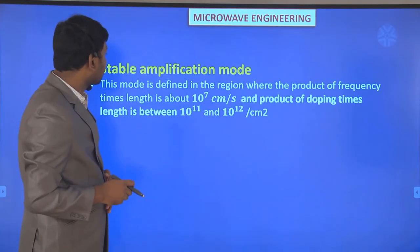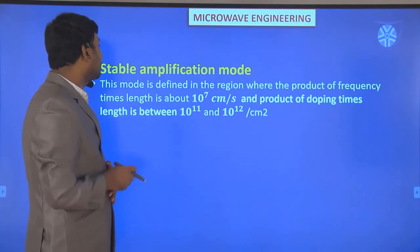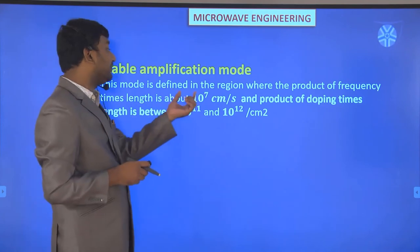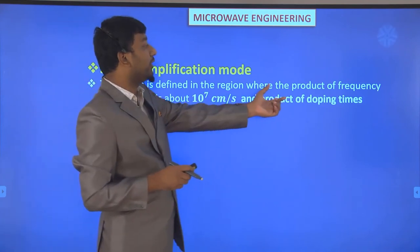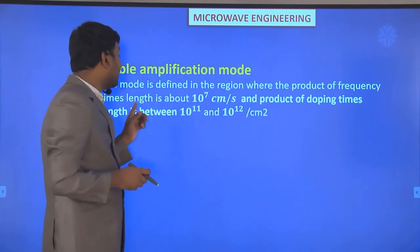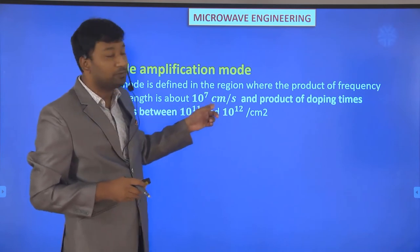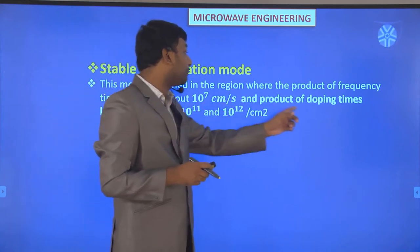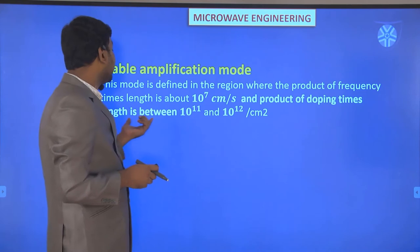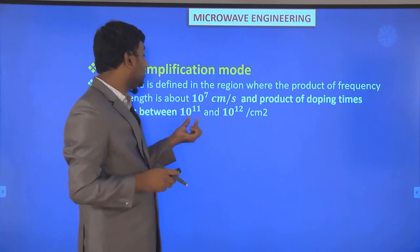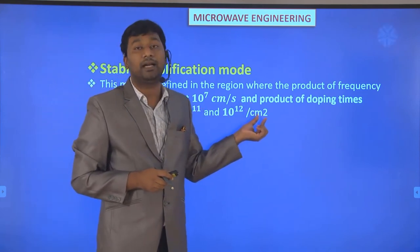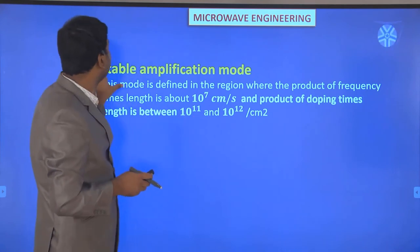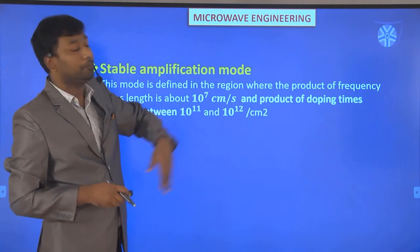The stable amplification mode is defined in the region where the product of frequency times length is about 10^7 cm/s and the product of doping times length is between 10^11 and 10^12 cm⁻². This mode is called the stable amplification mode.